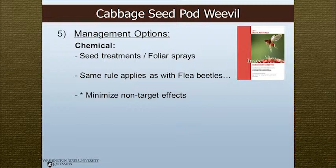Chemically, there are seed treatments and foliar sprays for this insect. I recommend consulting the Pacific Northwest Insect Management Handbook for specific chemicals and rates. One important note: since these guys are out when canola is almost at the flowering stage, you want to minimize non-target effects. Bees — with colony collapse syndrome impacting them — are foraging on your flowering canola, so really try to minimize any negative impacts to pollinators. You could spray late in the day when pollination is done.